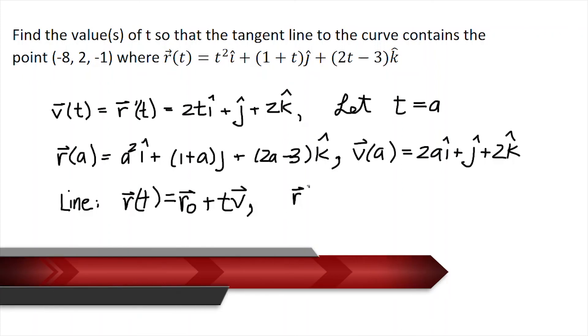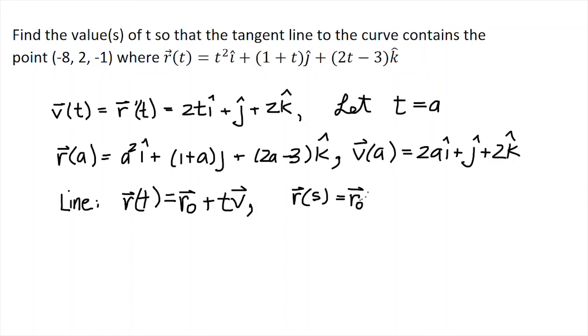So that I don't get confused, I'll just change the parameter. So my line in space will be r(s), the starting point r₀, and that's going to be that point that corresponds to t = a on my position vector, plus s times v, and that's going to correspond to the velocity vector, or the line of tangency, also at the point a.